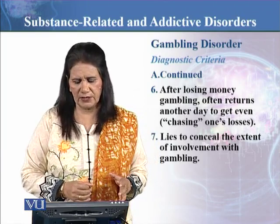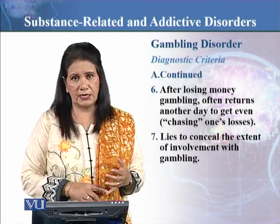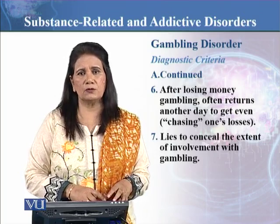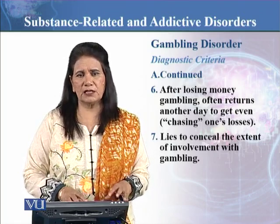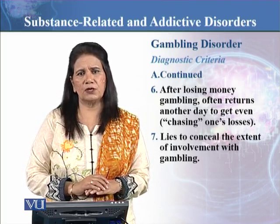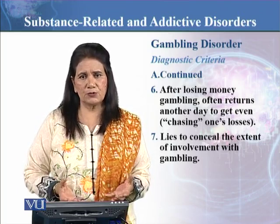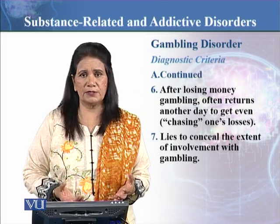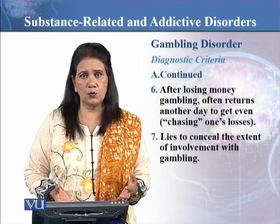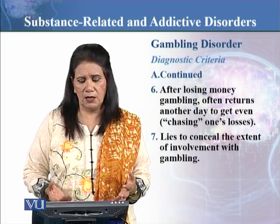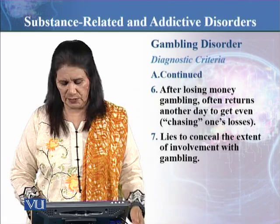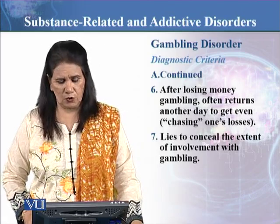The seventh symptom is that the person lies to conceal the extent of involvement with gambling. He does not accept to family members or relatives how deeply involved he has become in gambling. It is possible that he is losing money, facing business setbacks, or borrowing from others for gambling — and he hides all of this from his family.